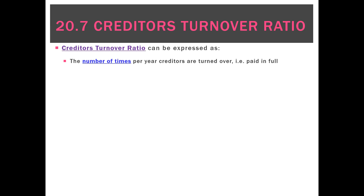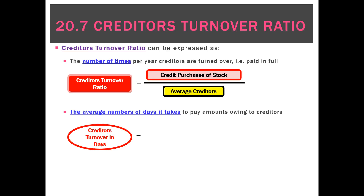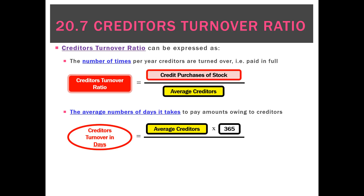The first way to calculate it is the number of times per year creditors are turned over. We take the credit purchases of stock during the year — excluding all cash purchases — and divide by our average creditors for the period. The average number of days to pay amounts owing to creditors is probably easier to interpret, so where possible we'd like to calculate that. We do so by flipping the ratio: moving average creditors to the top, multiplying by 365, and dividing by credit purchases of stock.